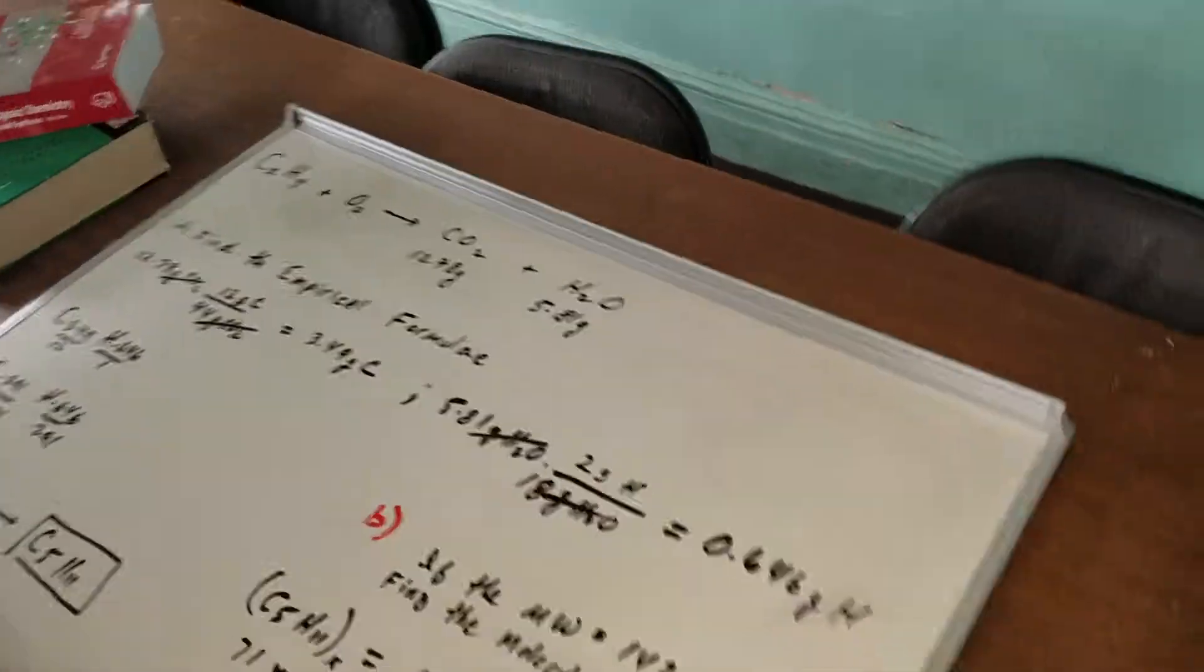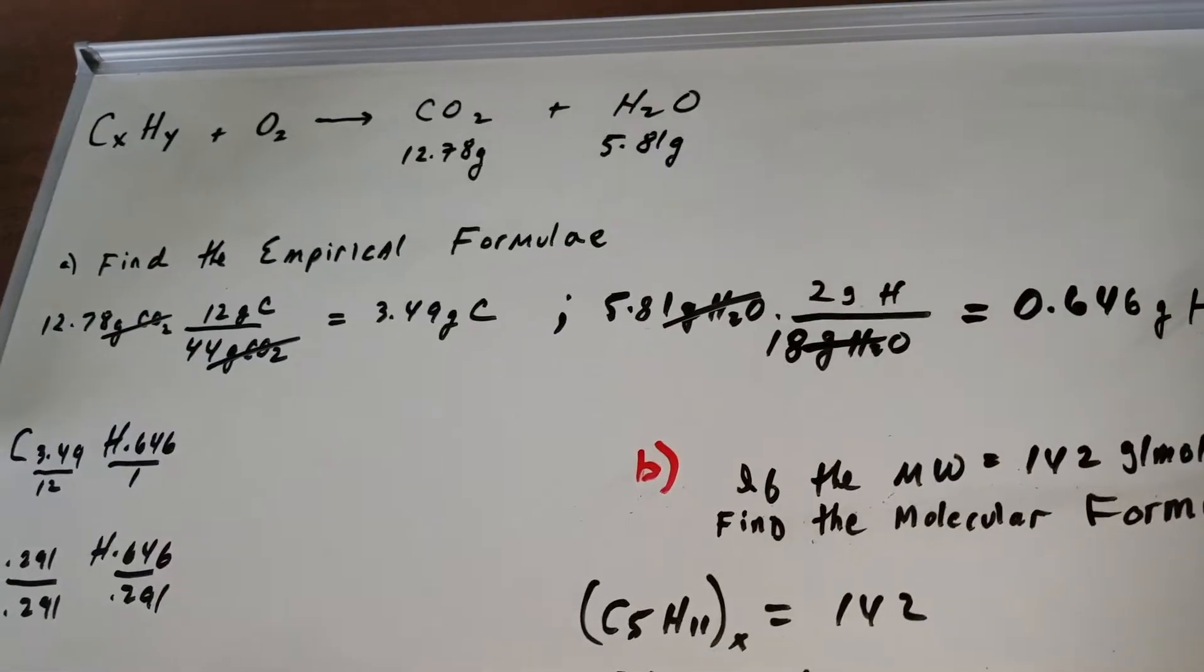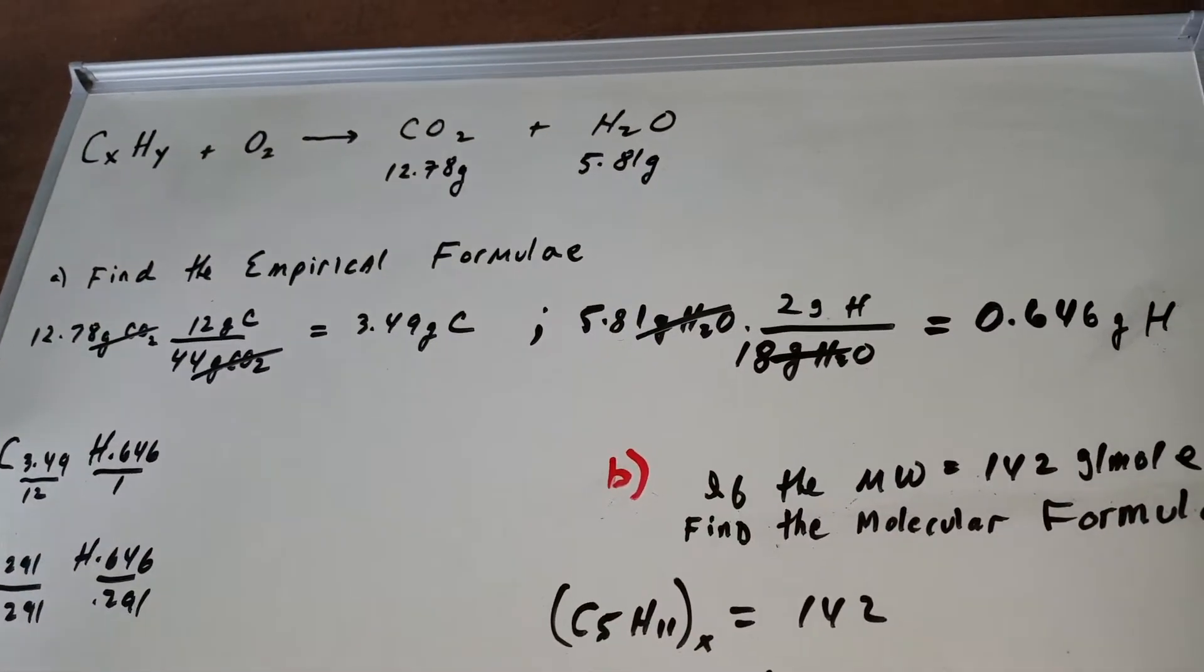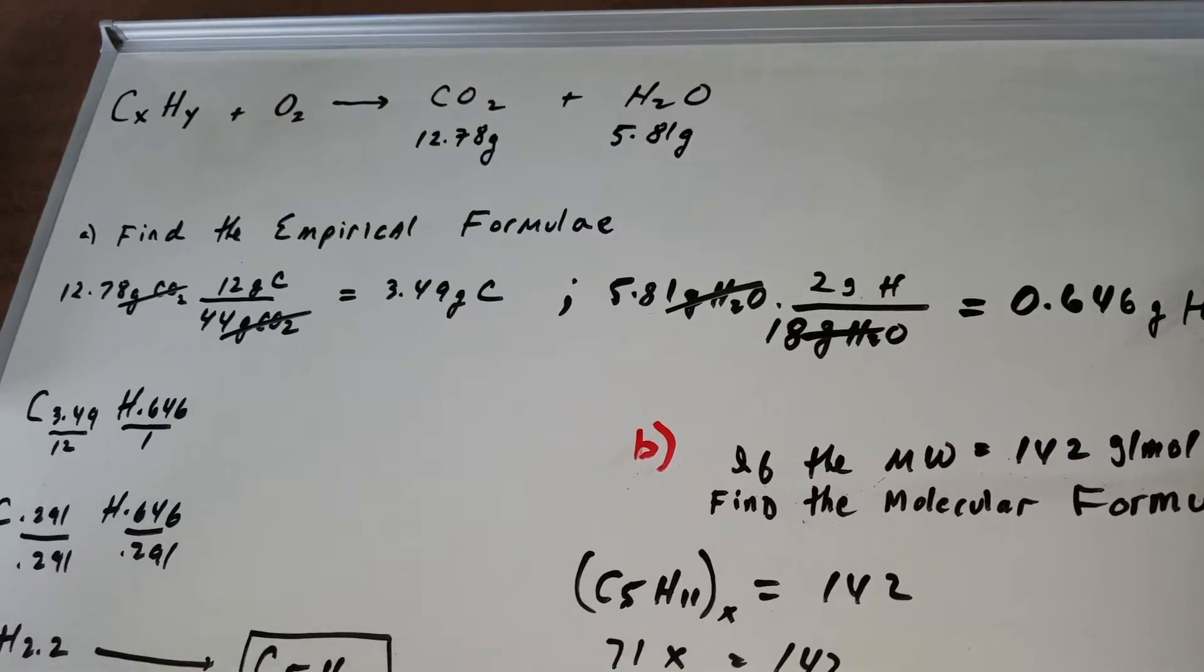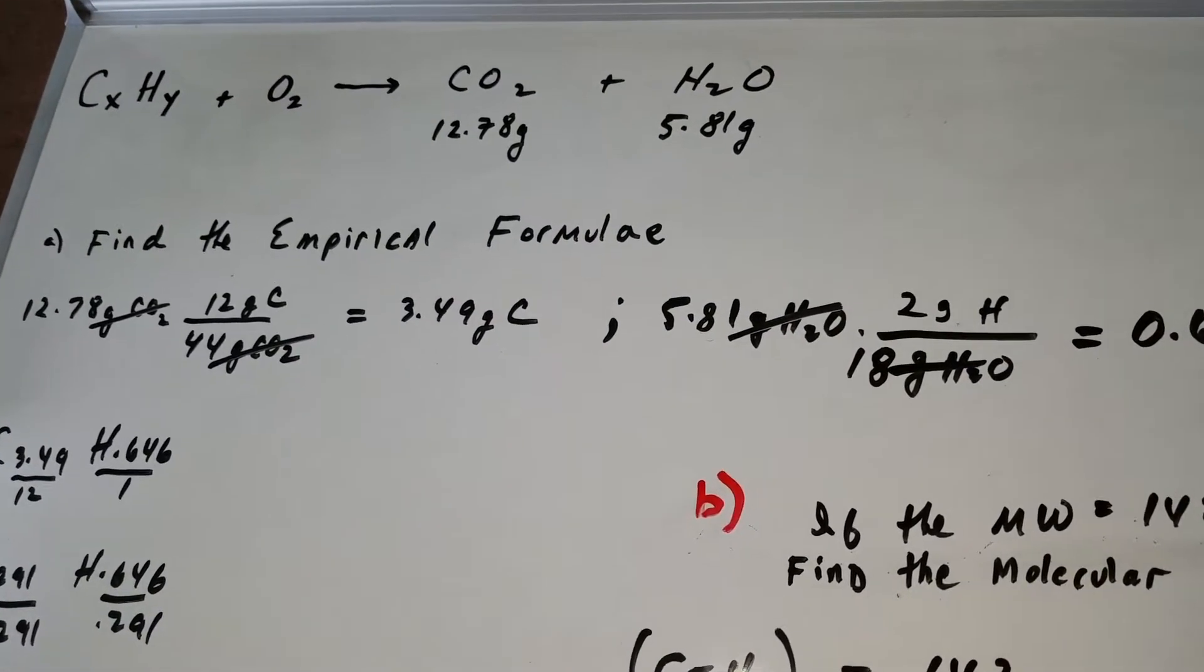I'm writing up another question for my Facebook study group that I think they're going to love. This is a very similar DAT question that most kids would get wrong. Oh Dr. Romano, I saw a mistake. What mistake? Empirical formulae. That doesn't have an E on it.